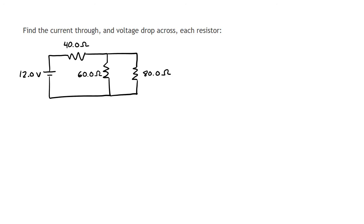I'll start by calling the first resistor after the battery R1. I'll call R2 the resistor that comes in parallel on the left, and R3 the other parallel resistor on the right. Now that I've assigned names to each resistor, we have a convention and it's going to become a lot easier for us to solve for these values.